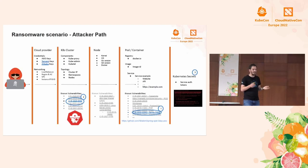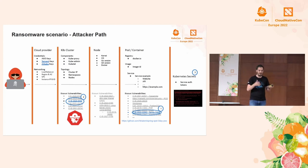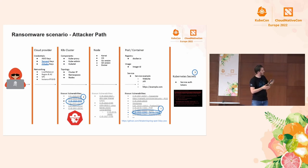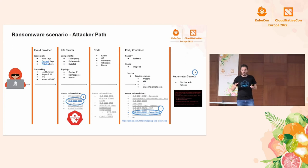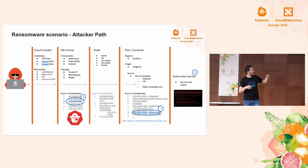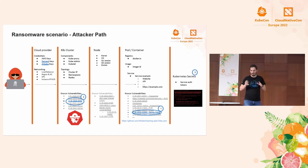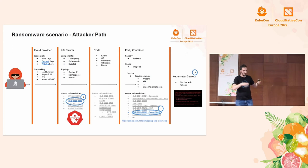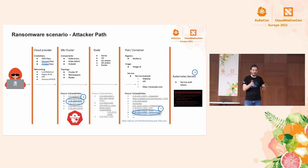The final scenario is ransomware, which is a bit unusual for Kubernetes clusters — more typical for traditional environments where you encrypt data and demand payment. In this example, you know an application is vulnerable and gain initial access via Spring Cloud by injecting a command over HTTP. You get access to the container, and using information from Prometheus about a vulnerable component or CVE, you can move across namespaces, access secrets, and reach data in the database. The challenge is then asking for payment.